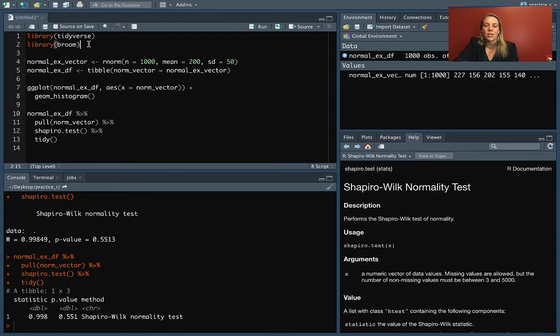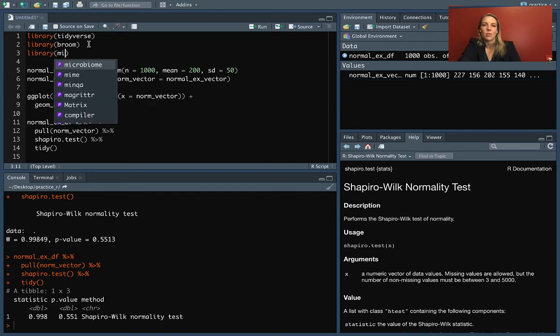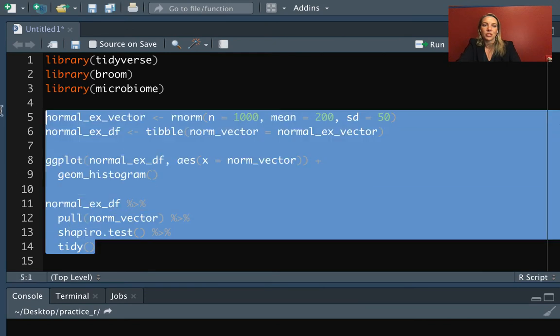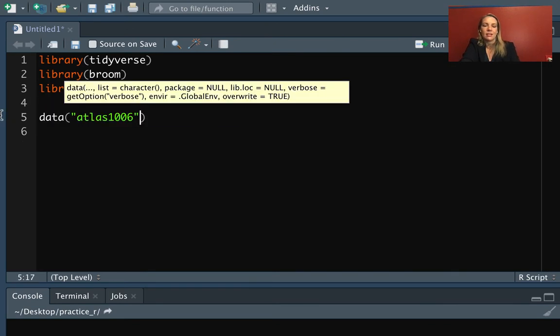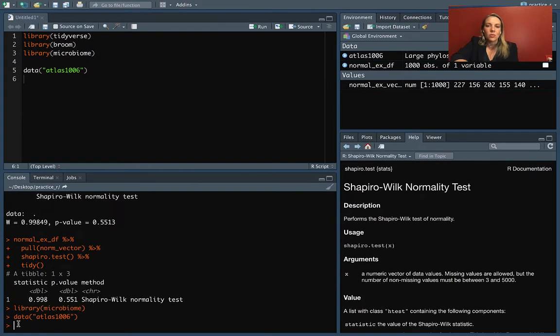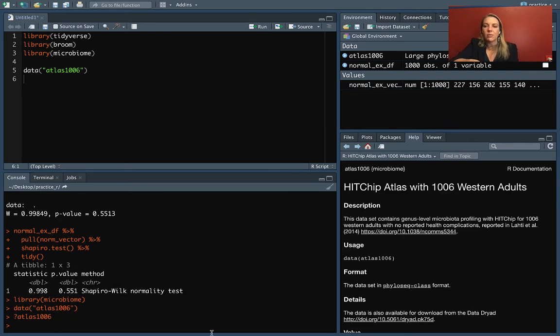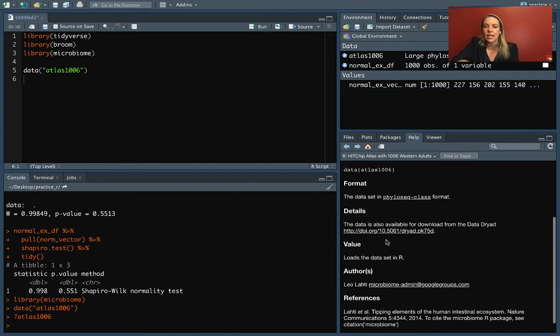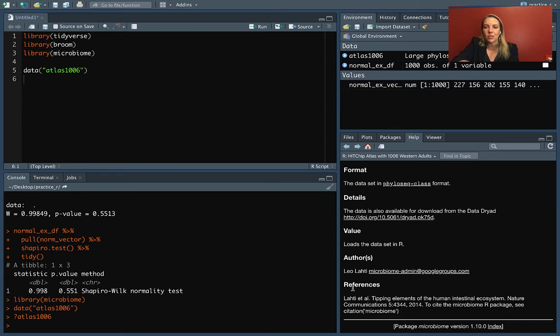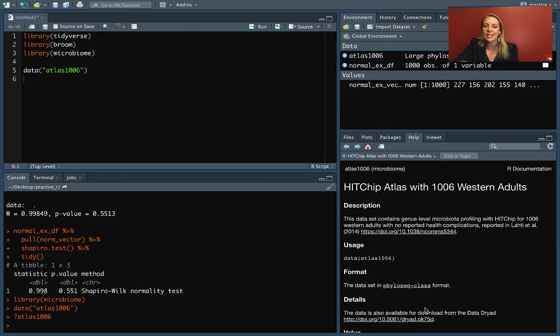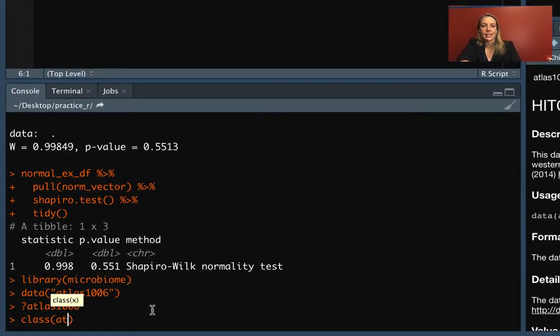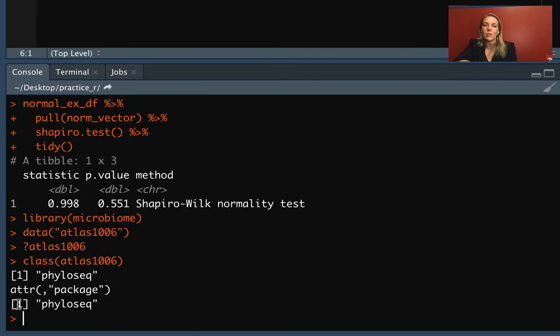Once you have this, we can do the same process that we normally do. You can do library microbiome, and then the name of this particular data set is Atlas1006. If you do the question mark, this data set does have a help file that comes with it and gives some different information about the data set, including a reference to a paper that describes the data. This data is in a special class called a phyloseq class.